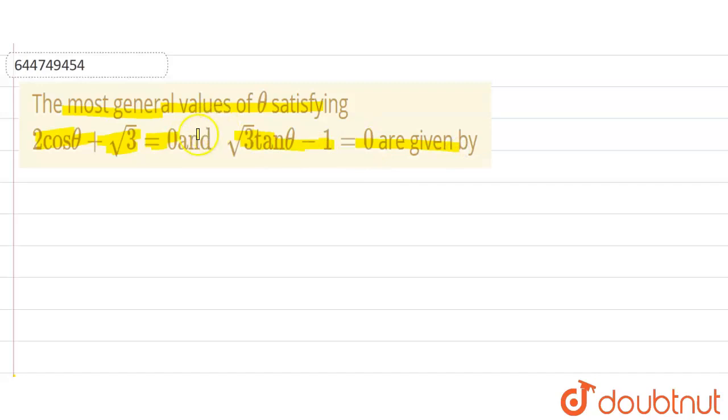First note down the expression 2 cos theta plus root 3 equals 0. From here cos theta equals minus root 3 by 2, where theta is pi plus pi by 6 which is 7 pi by 6.